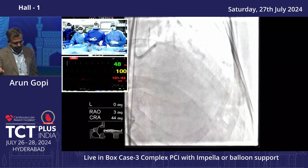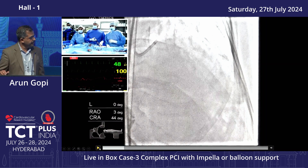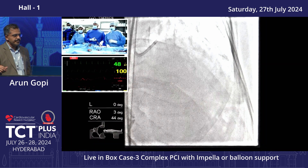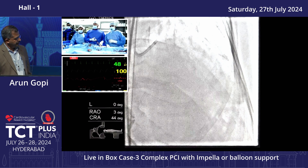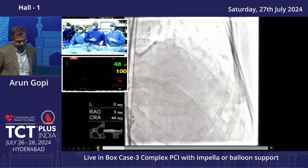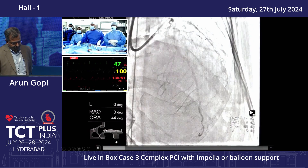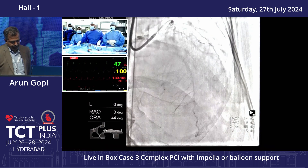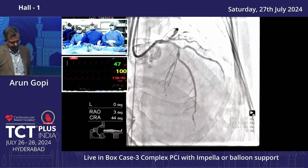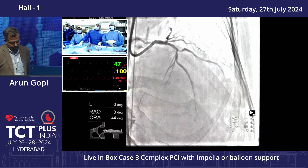We started with the right femoral access, EBU 3.5 7 French guide. Starting pressures: systolic 90, diastolic 50, IABP on. Angiographically, we have a critical disease in the LAD-diagonal bifurcation — it is a Medina 111 lesion with a significant-sized diagonal, the lesion extending into the diagonal more than 10 mm. The side branch angiographically looks definitely more than 2.5 mm.